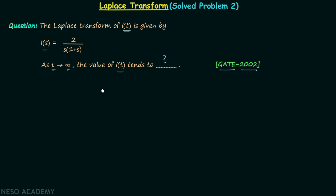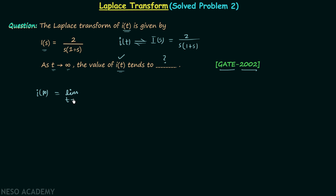We need to find the value of the time domain signal i(t) when t is approaching infinity. The signal i(t) has the Laplace transform I(s), where I(s) equals 2 over s multiplied by 1 plus s. The question asks us to find the final value of i(t), that is i(infinity), which equals the limit as t tends to infinity of i(t). The final value theorem can be used to find this.